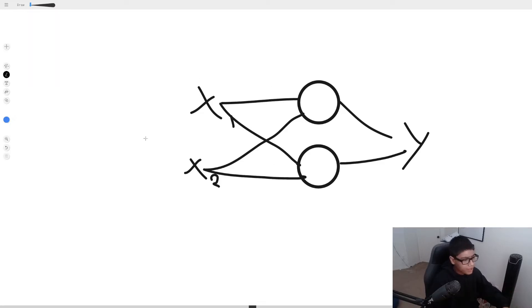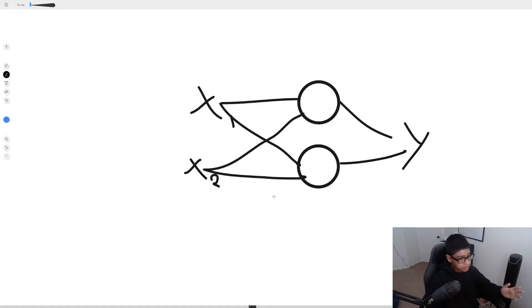So over here, you have x1, x2, they're connected to two circles, and those two circles are connected to y. So what does this all mean? Well, basically, first, before I even tell you what it all means, I'm just going to give you an example.